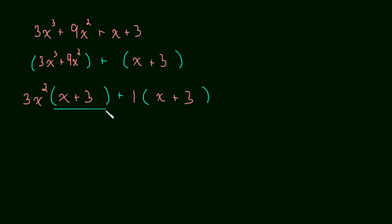And now we have an x plus 3 common to both terms. So we factor that out. So this becomes 3x squared plus 1 times by x plus 3. And that's as simple as we can get this particular problem.